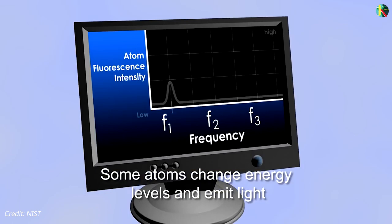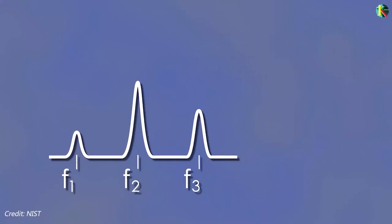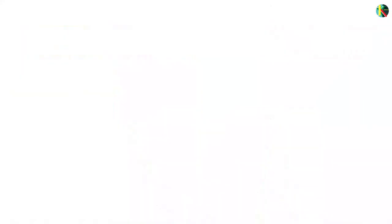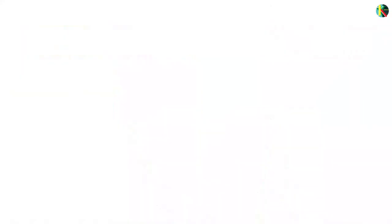Eventually, a microwave frequency is achieved that alters the states of most of the cesium atoms and maximizes the fluorescence. NIST-F1's cooler and slower atoms allow more time for the microwaves to interrogate the atoms and determine their characteristic frequency, providing a more sharply defined signal.